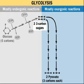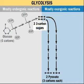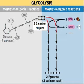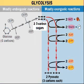The last five steps of glycolysis convert the two 3-carbon sugars produced from a 6-carbon molecule of glucose to two molecules of pyruvate. These reactions are exergonic. They produce energy storing molecules: two electron carriers, NADH, and four ATPs.